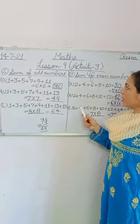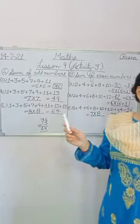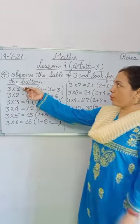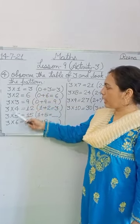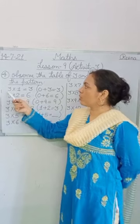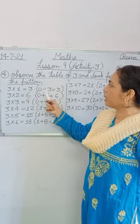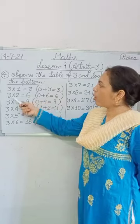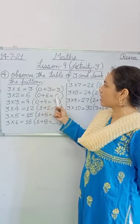In Part D of question number 3, solve by yourself. Iska D part aur question number 2 ka D part khud karo. Now question number 4: observe the table of 3 and look for the pattern. You have been given the table of 3. Firstly look at the pattern, then fill in the blanks. First: 3 multiplied by 1 is equal to 3 — that means 3 ones are 3, and in bracket 0 plus 3 equals 3. Next: 3 twos are 6, and in bracket 0 plus 6 equals 6.